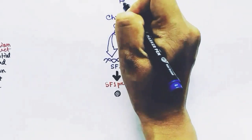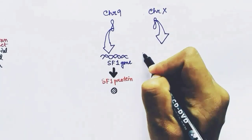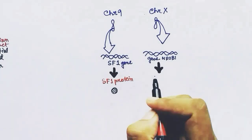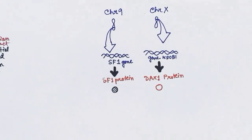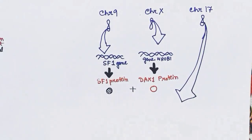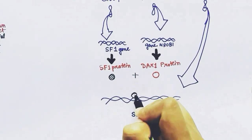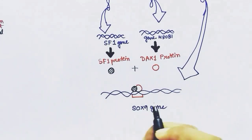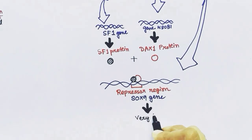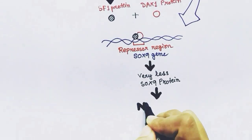Females have two X chromosomes, and the X chromosome carries a gene that produces DAX1 protein. Males have one copy, females have two. This DAX1 protein forms a complex with SF1 protein, binds to the SOX9 gene at the repressor region, and represses SOX9 protein production. Very little SOX9 protein is produced, so no testis is formed, no testosterone is produced, no AMH is produced, and the Müllerian duct is not destroyed.